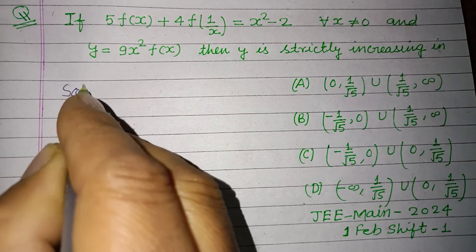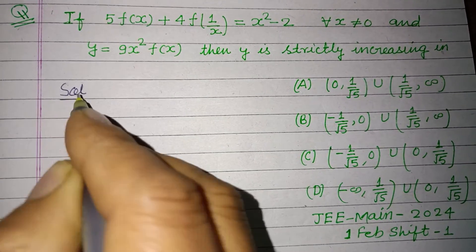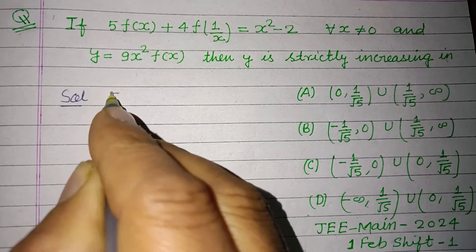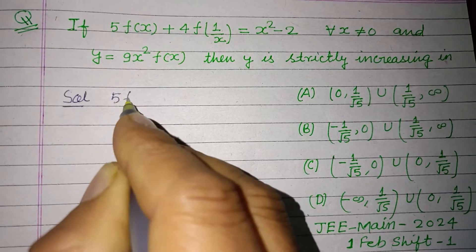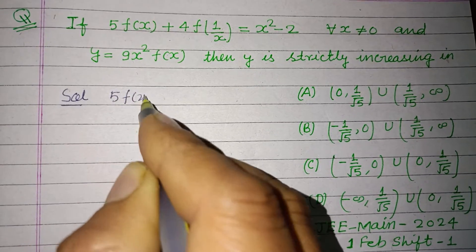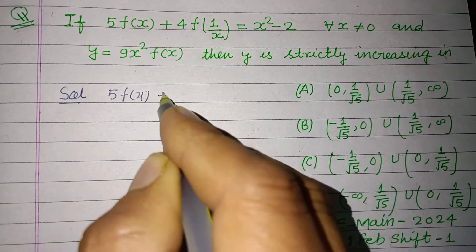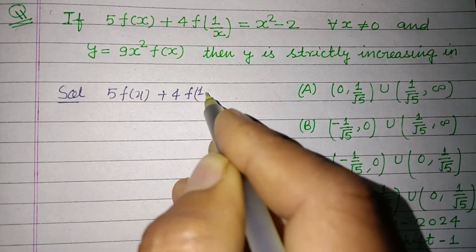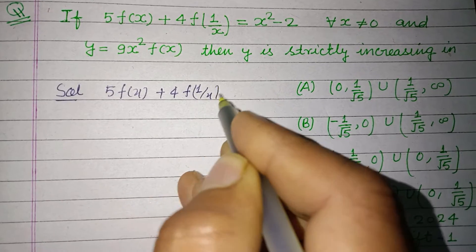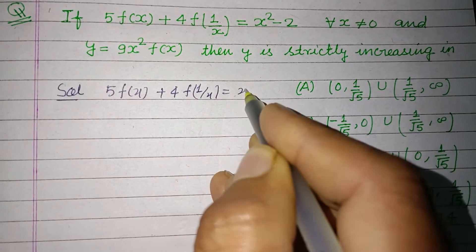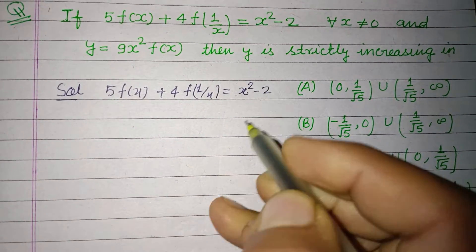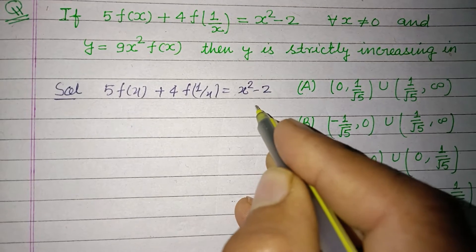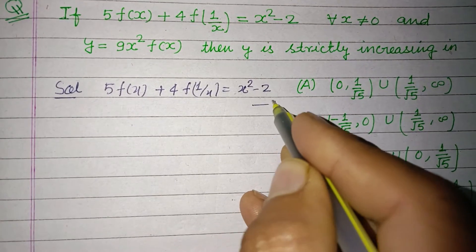So students, here we have 5f(x) + 4·f(1/x) = x² - 2. This is our first equation.